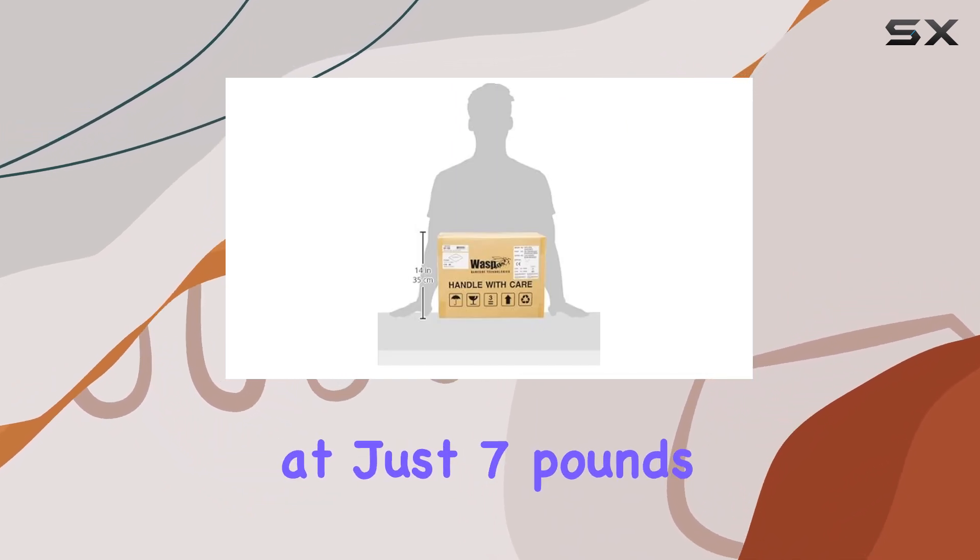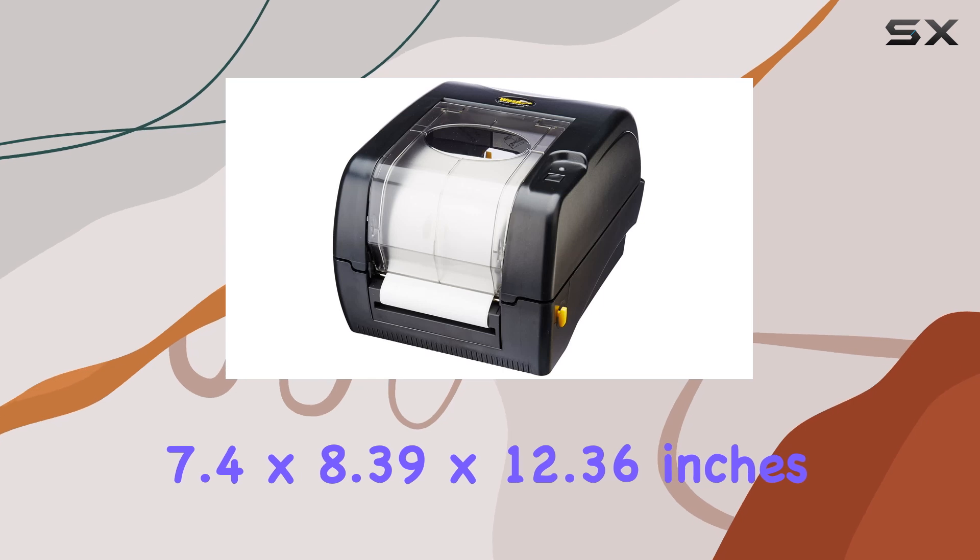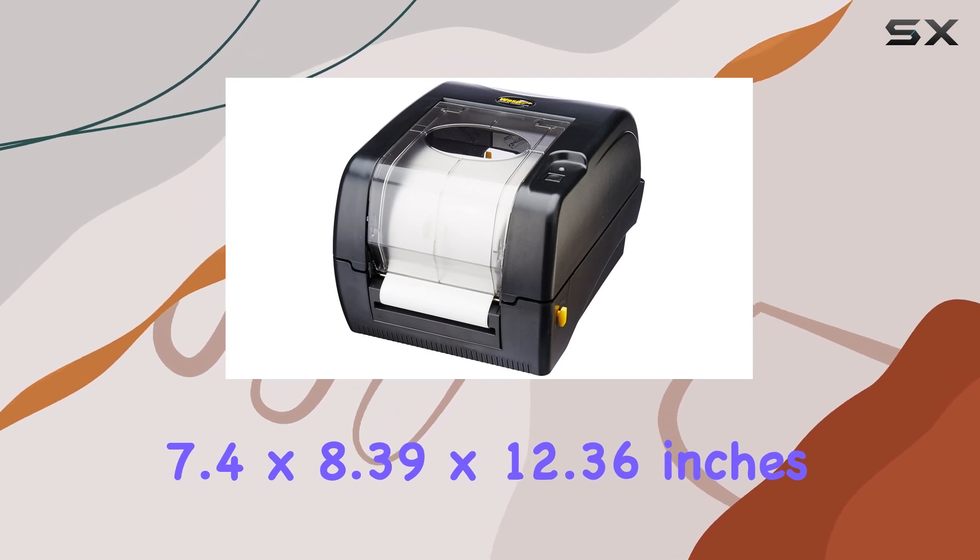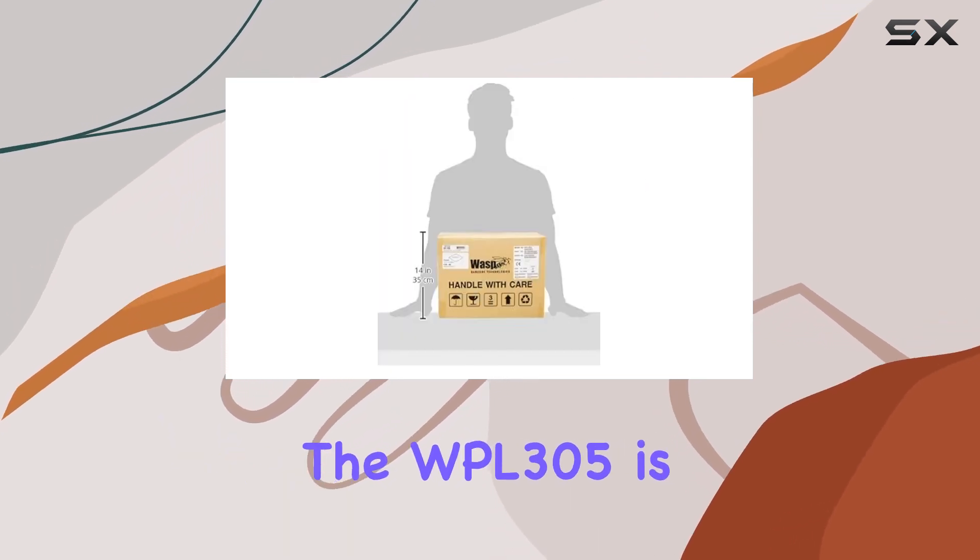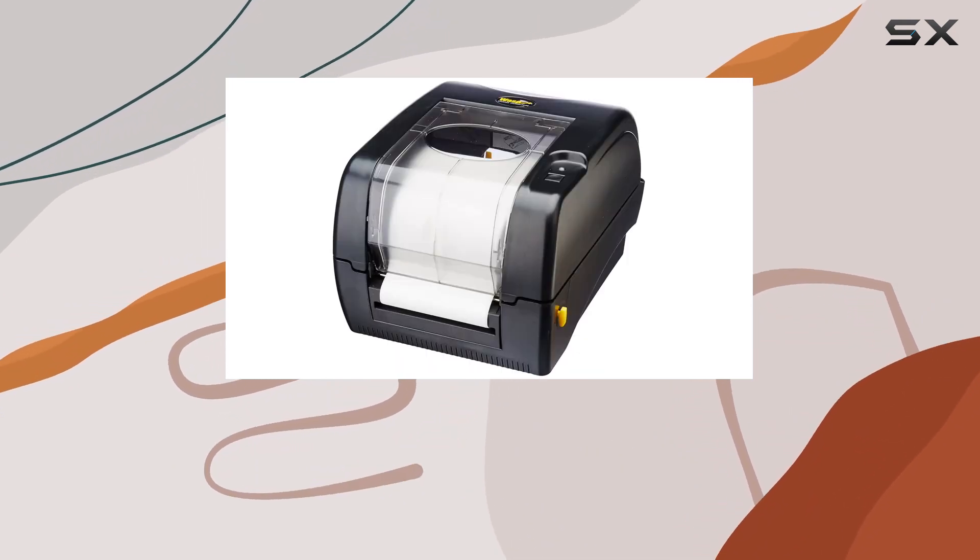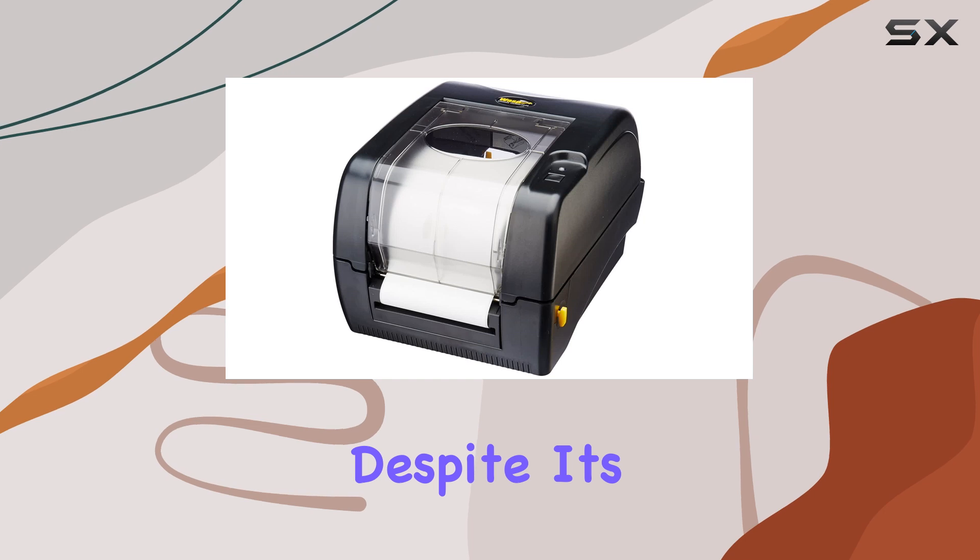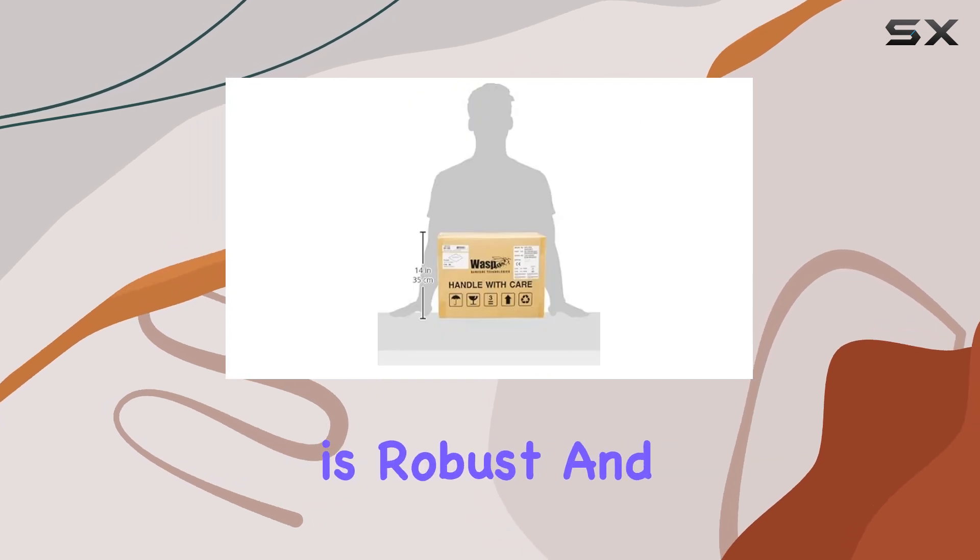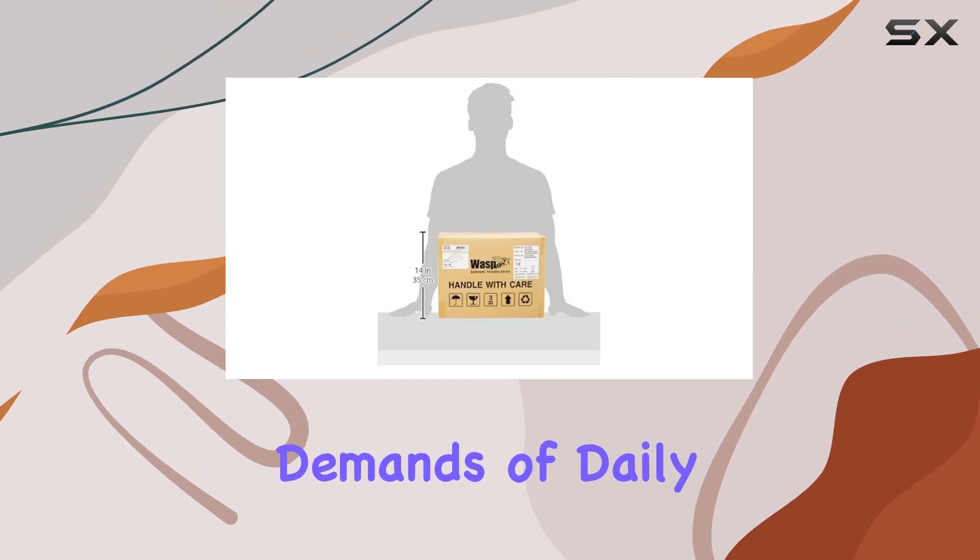Weighing in at just 7 pounds and measuring 7.4 by 8.39 by 12.36 inches, the WPL305 is compact and lightweight, making it easy to fit into tight spaces or move as needed. Despite its small footprint, the printer is robust and durable, built to handle the demands of daily use.